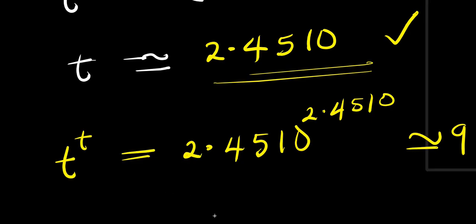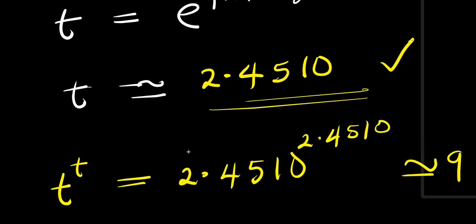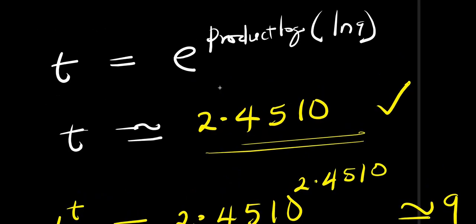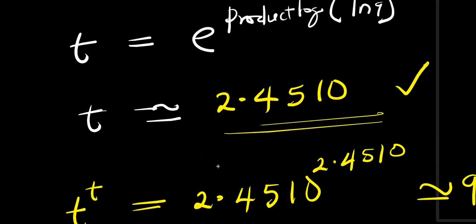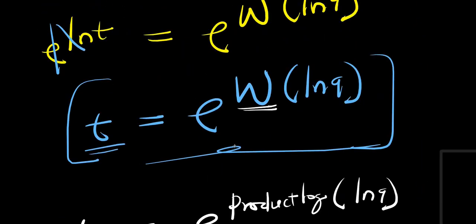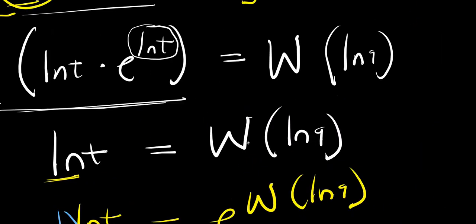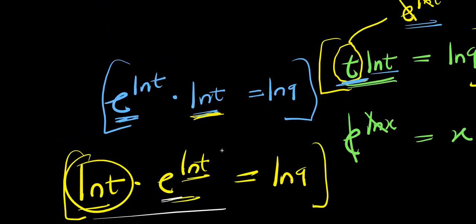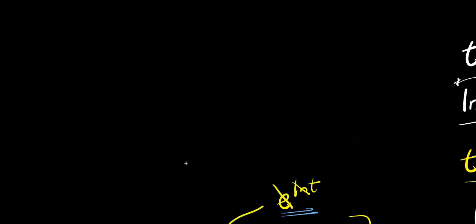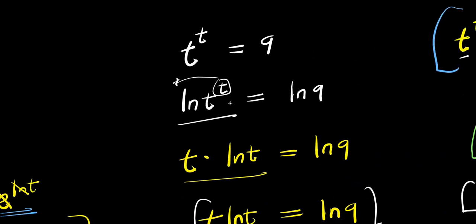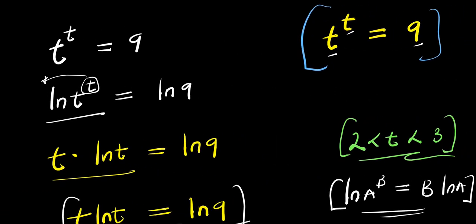So if you have t to the power of t, that simply means you have 2.4510 to the power of 2.4510, and this will give you an approximate value of 9. You can test this out to confirm it satisfies the equation. So that is it — that is how you can actually get it right. Ladies and gentlemen, see you again. Thank you.